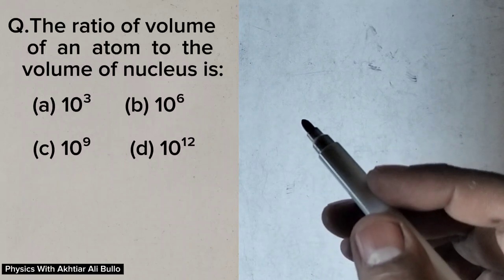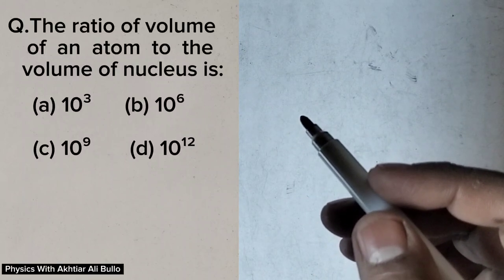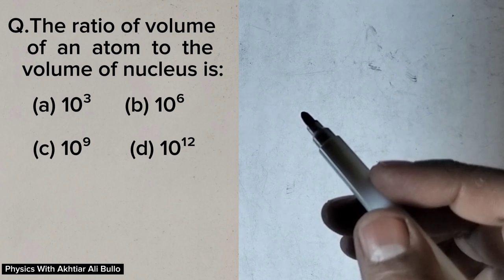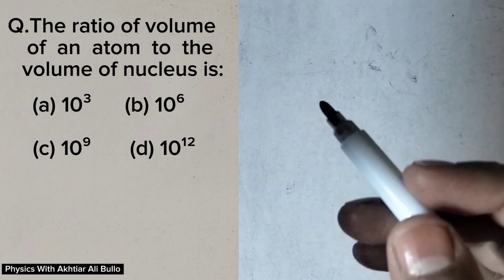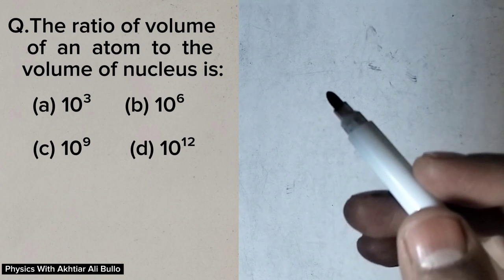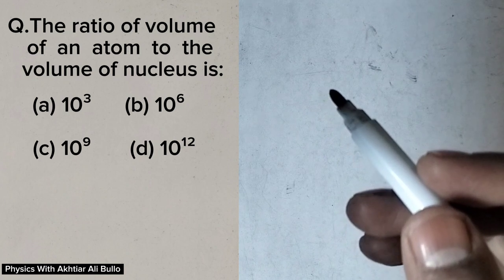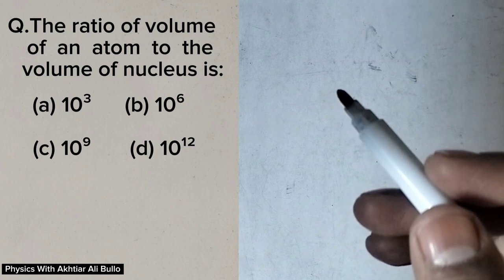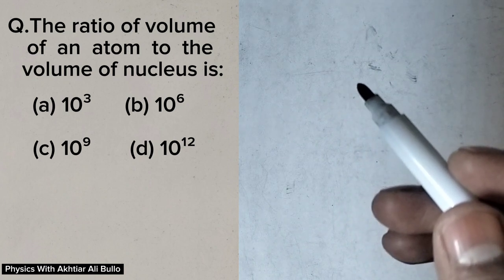The question is: the ratio of volume of an atom to the volume of nucleus is — A. 10 cubed, B. 10 raised power 6, C. 10 raised power 9, D. 10 raised power 12.